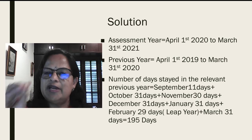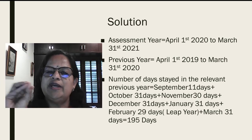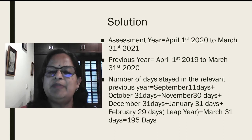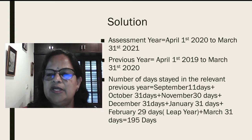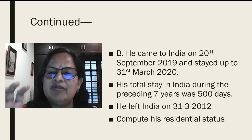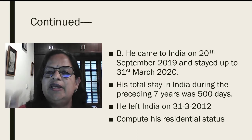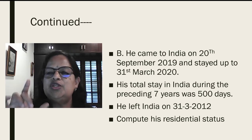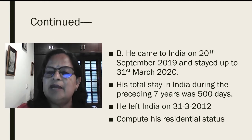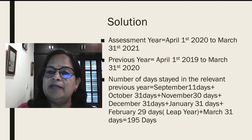As usual, write the assessment year and previous year. Now, calculate the number of days stayed in the relevant previous year. He came to India on 20th September 2019, so we count from September 20th to March 31st.